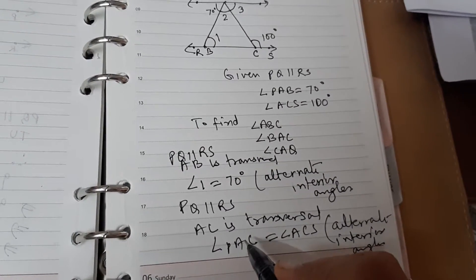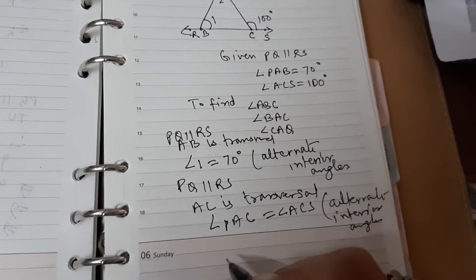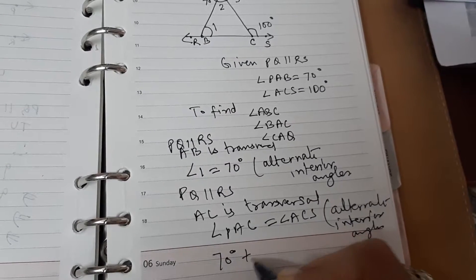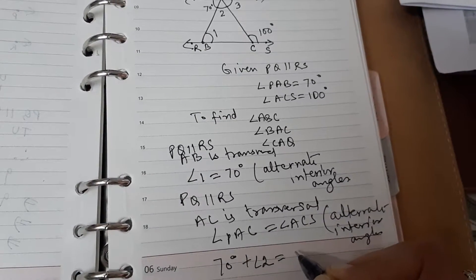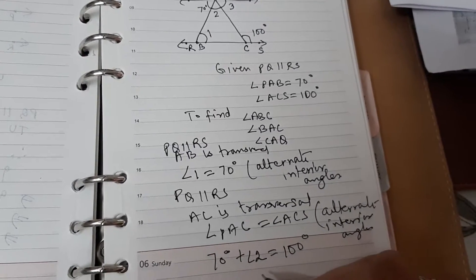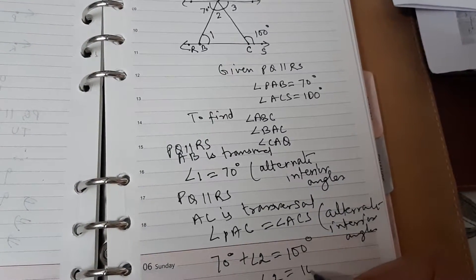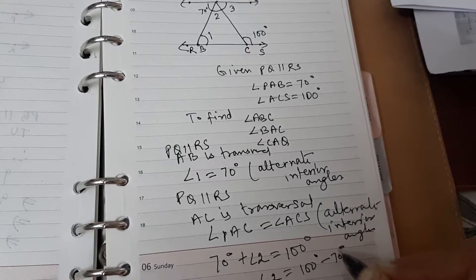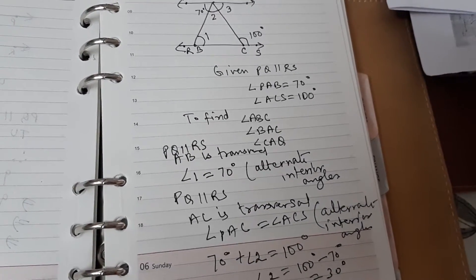Now, what is angle PAC? This is 70 degrees plus angle 2. And angle ACS is 100 degrees. So, what will be angle 2? 100 degrees minus 70 degrees which is equal to 30 degrees.